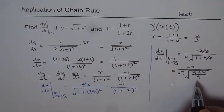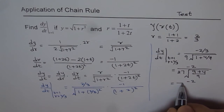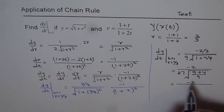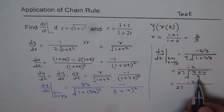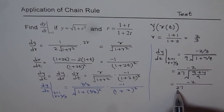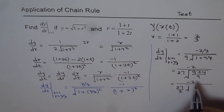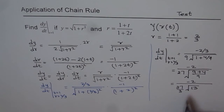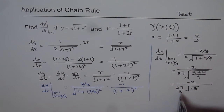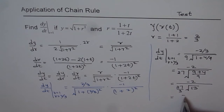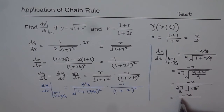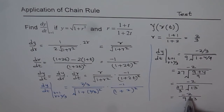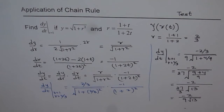It's important to show all these steps because students often make mistakes at this stage. Even if you do make an error here, since you're following a method, you still get credit for that. Our final answer is dy/dt at t equals 1 equals minus 2 over 9 times the square root of 13.